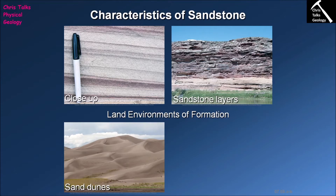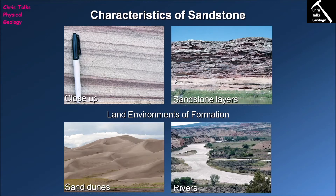The types of environments where we might expect to find sands forming — on land, there are two main environments in which we would expect to find sandstones forming on a regular basis: sand dunes and rivers.